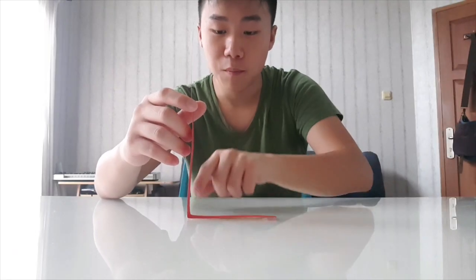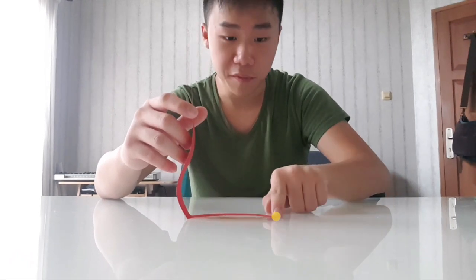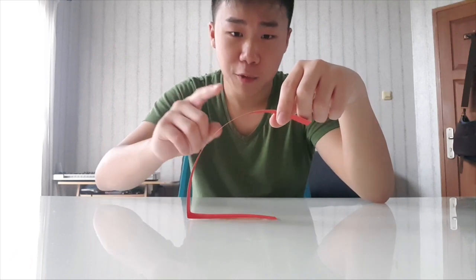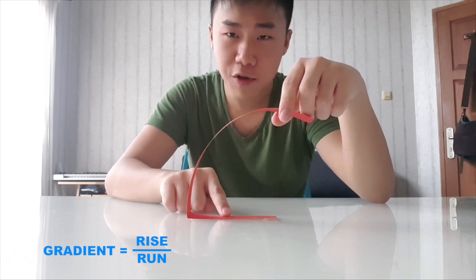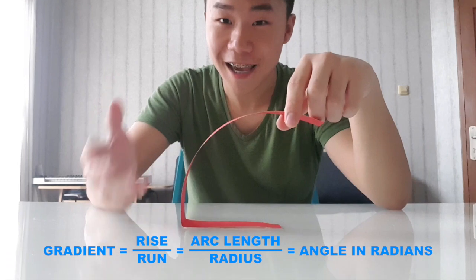Now we'll curve it such that both ends of the vertical component is the same distance away from this point right here. Now it becomes an arc. And notice that the ratio between the vertical component and the horizontal component is now the ratio between the length of the arc and the radius. The gradient is the angle!